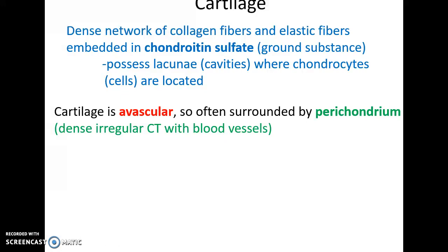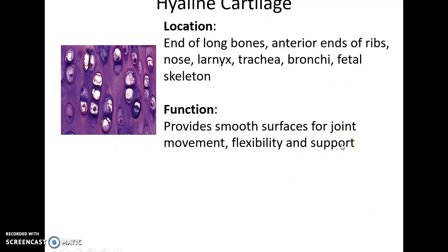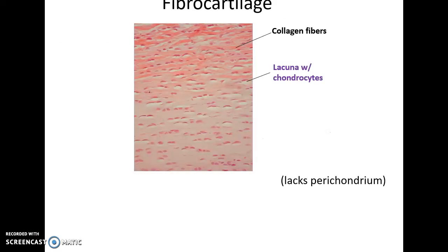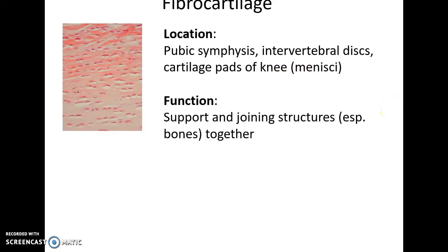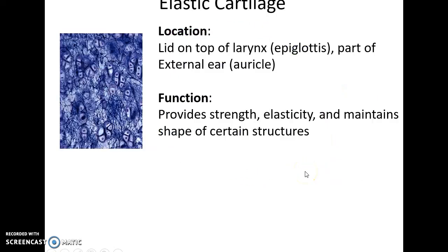Cartilage is a type of connective tissue that is often avascular, surrounded by a perichondrium that brings in blood vessels. It has a dense network of collagen and elastic fibers with chondroitin sulfate as the ground substance, and cells called chondrocytes are found in little spaces called lacunae. Hyaline cartilage is found at the ends of long bones, around the ribs and nose, providing smooth surfaces for joint movement, flexibility, and support. Fibrocartilage has visible collagen fibers and is found in the pubic symphysis and intervertebral discs. Elastic cartilage has elastic fibers in a mesh-like arrangement, found in the epiglottis and external structures of the ear, providing strength and maintaining shape.